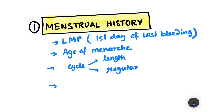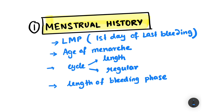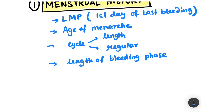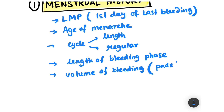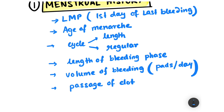We also note the length of the bleeding phase. Then we talk about the volume of bleeding, which must be quantified in terms of pads changed per day or tampons per day. After that, you note whether there was any passage of clots, and whether the blood was clotted or a normal flow. Finally, note any associated symptoms such as pain, nausea, vomiting, or fever.